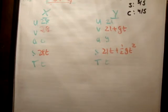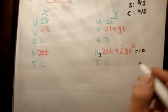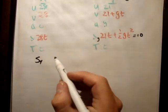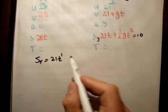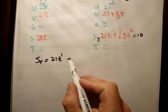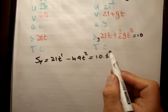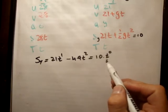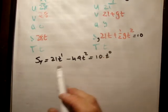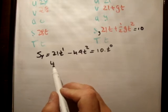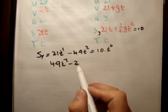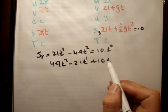We're asked to find the speed when it is 10 meters off the ground. So s sub y is equal to 10. So we'll say s sub y is equal to 21t to the 1 minus 4.9t squared and that's equal to 10 times t to the 0. Something to the 0 is equal to 1. Just rearrange it so I get the square positive. So it's 4.9t squared minus 21t to the 1 plus 10t to the 0 is equal to 0.